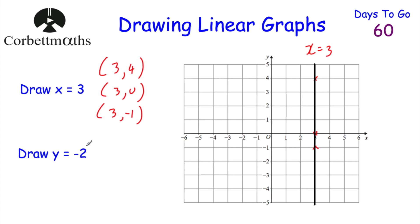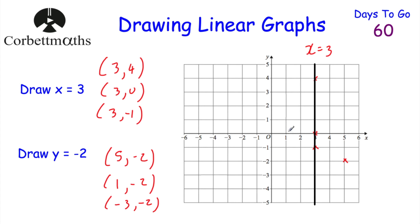If asked to draw a graph such as y equals -2, these are all the coordinates where the y-coordinate equals -2, such as (5, -2), (1, -2), or (-3, -2). All those coordinates lie on a horizontal line passing through -2 on the y-axis. So y equals 1 would be a horizontal line through 1 on the y-axis, and y equals 4 through 4, and so on. This is useful not only for drawing linear graphs, but also for reflections, where you might need to reflect shapes in different mirror lines.